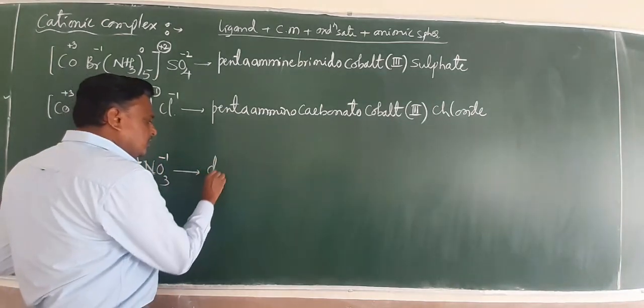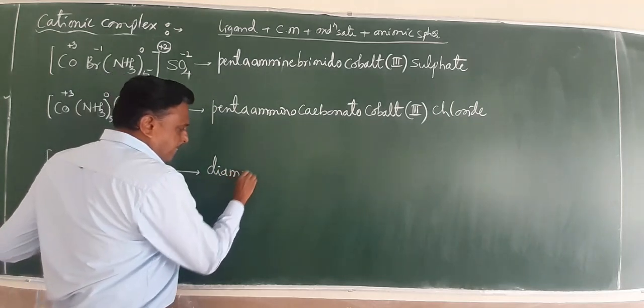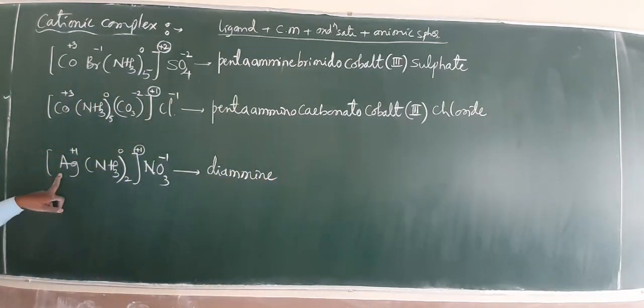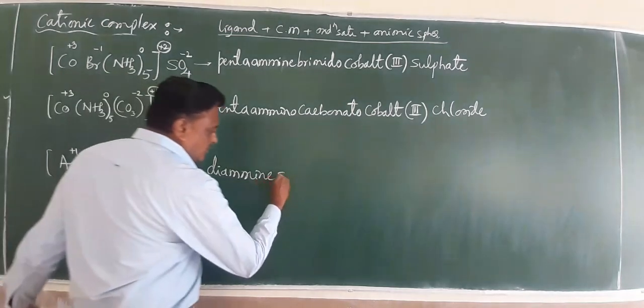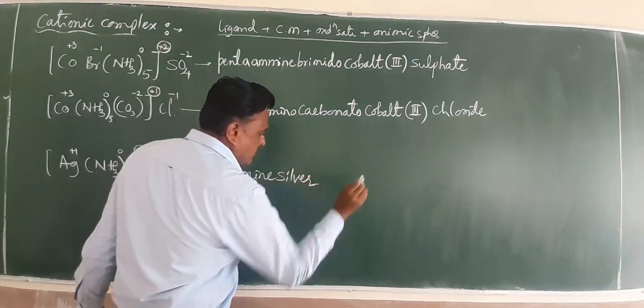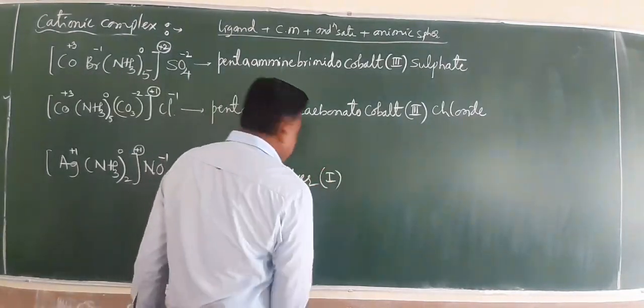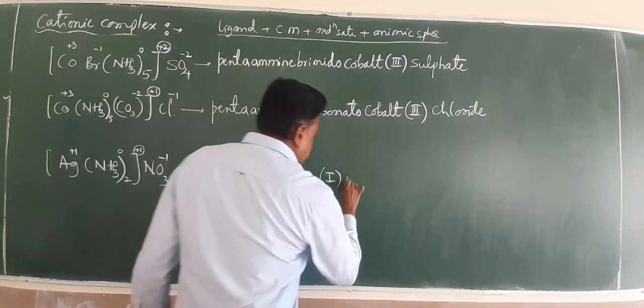The component is only to diamine. Ag means silver. This is called diamine silver. Oxidation state is 1.